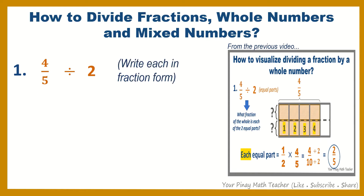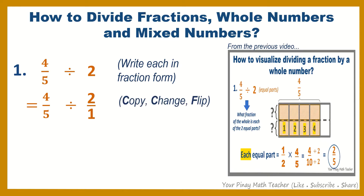Write each in fraction form. So we have 4 fifths, copy the division sign, and write 2 as a fraction which is equal to 2 over 1. After doing this, you do the 3 steps: copy, change, flip.